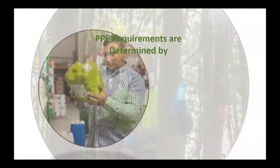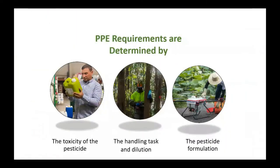The type of PPE required when handling pesticides depends on several factors. One, the toxicity of the pesticide — danger, warning, or caution. Two, the handling task and dilution: will you be working with it in concentrated form while mixing and loading, or are there different PPE requirements when applying, performing early entry worker tasks, or cleaning equipment? Three, the pesticide formulation — are you working with a dust or fine mist requiring respiratory protection, or a liquid that could splash in your eyes requiring eye protection? The label language sorts this out for you.